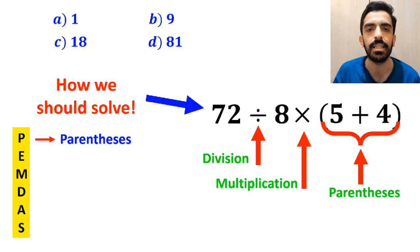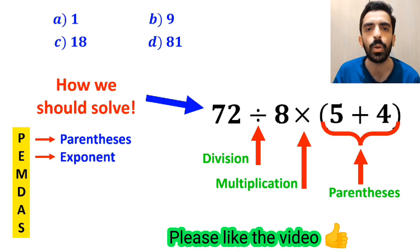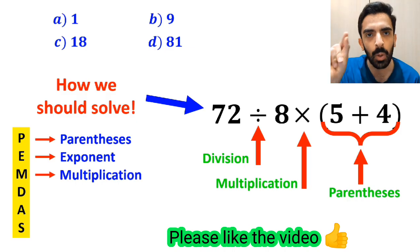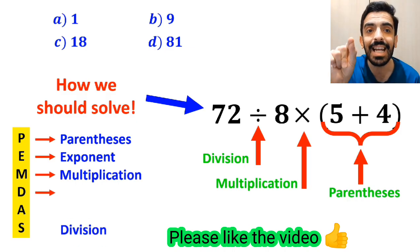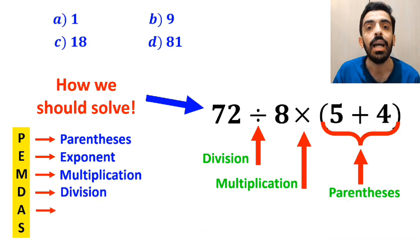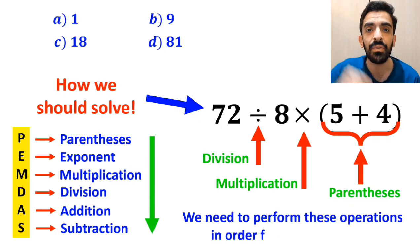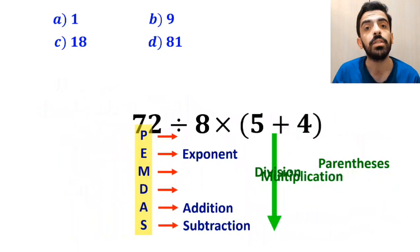In this role, P stands for parenthesis, E stands for exponent, M stands for multiplication, D stands for division, A stands for addition, and S stands for subtraction. We need to perform these operations in order from top to bottom.